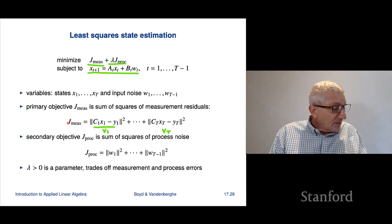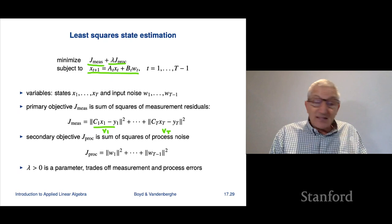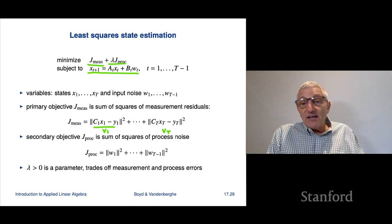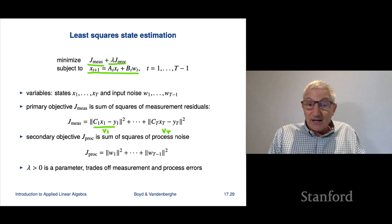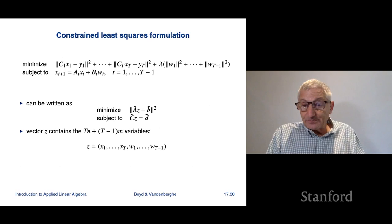So here they are. The measurement noise is simply the sum of the squares of the VTs. The secondary objective is going to be the sum of squares of the process noise. And Lambda, as I said, is a parameter that we can trade off. Now I should say here in the state estimation problem, unlike the control problem, we're actually going to have a non-ad hoc, a principle method by which to choose Lambda. We'll see that we're going to be able to do that by cross-validation.